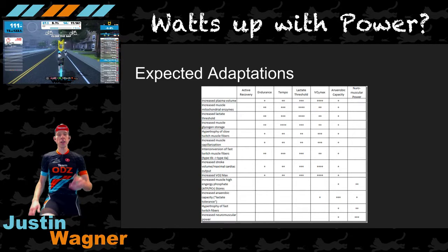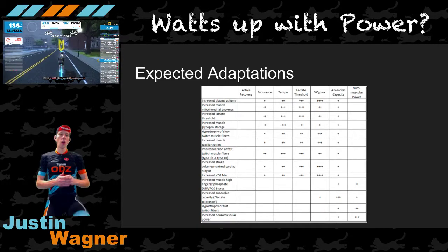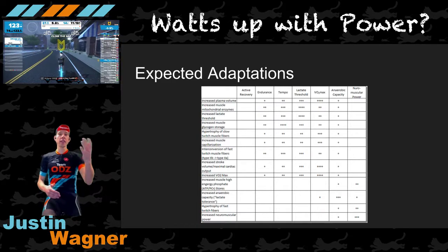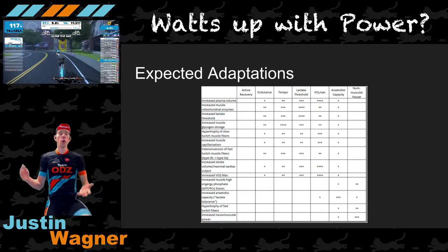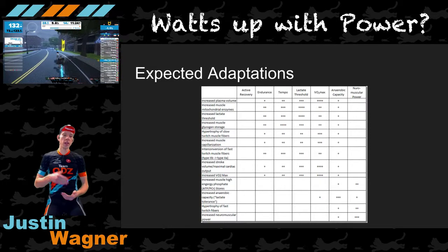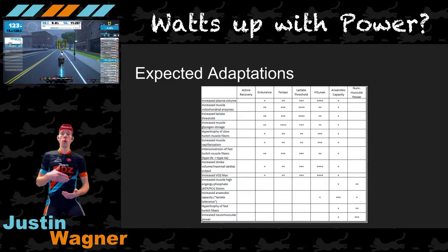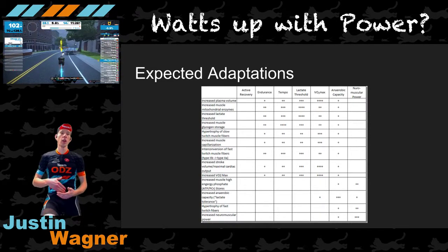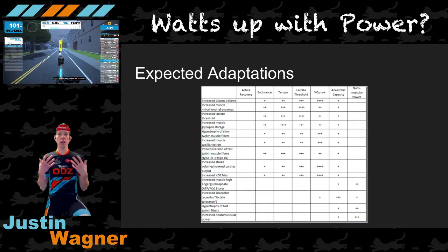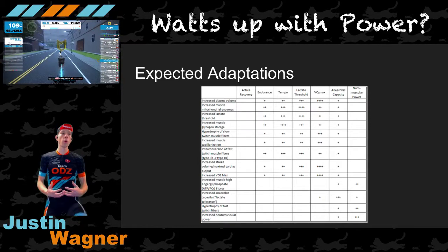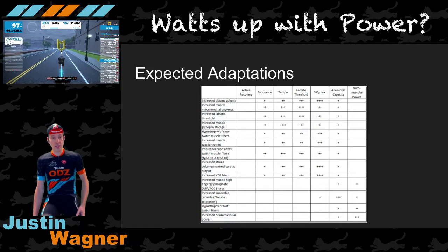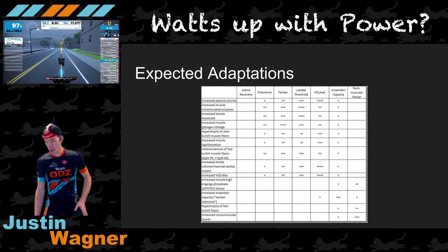This chart basically helps you understand why we get an FTP, because when we start doing structured workouts, we can really hone in on what part of our physiological system we're trying to improve, what we want our body to be more efficient at, and then we train in those zones to get those different responses.